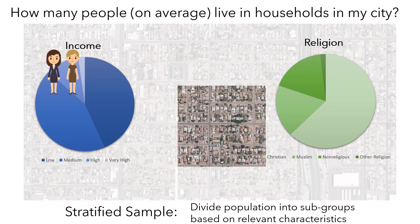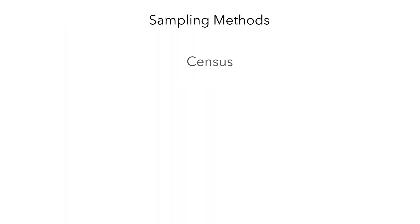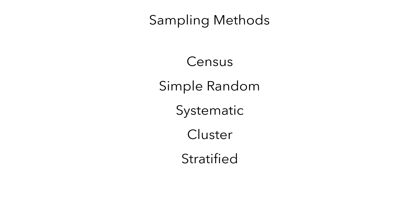Let's summarize what we've seen. We've looked at the census, the simple random sample, the systematic sample, the cluster sample, and stratified sampling. Each method has its own strengths and potential issues. You're not limited to just one — it is common to combine multiple methods into a multi-level sample, for example selecting a cluster and then systematically surveying every fifth household within it. The key goal with all of these methods is to generate a sample that accurately represents the population, which lets you make an accurate inference about the population.